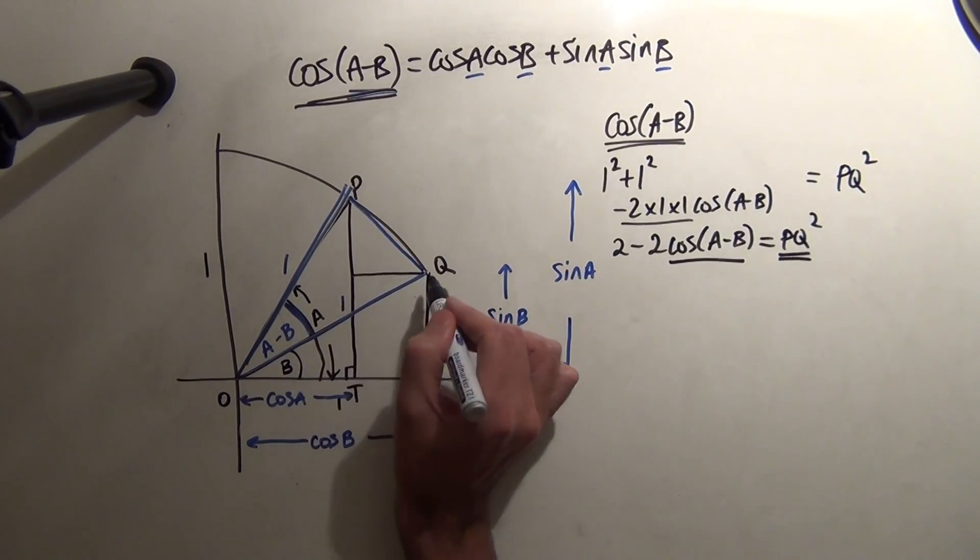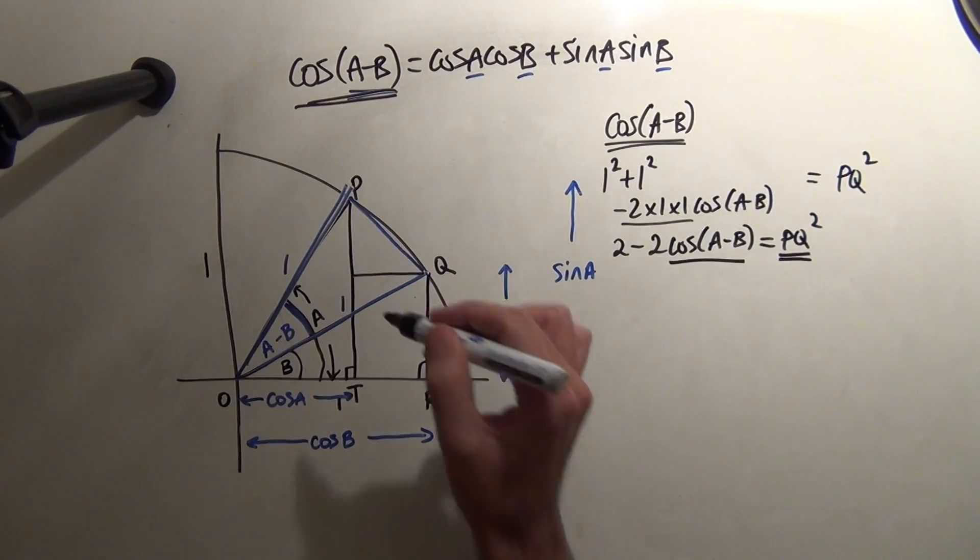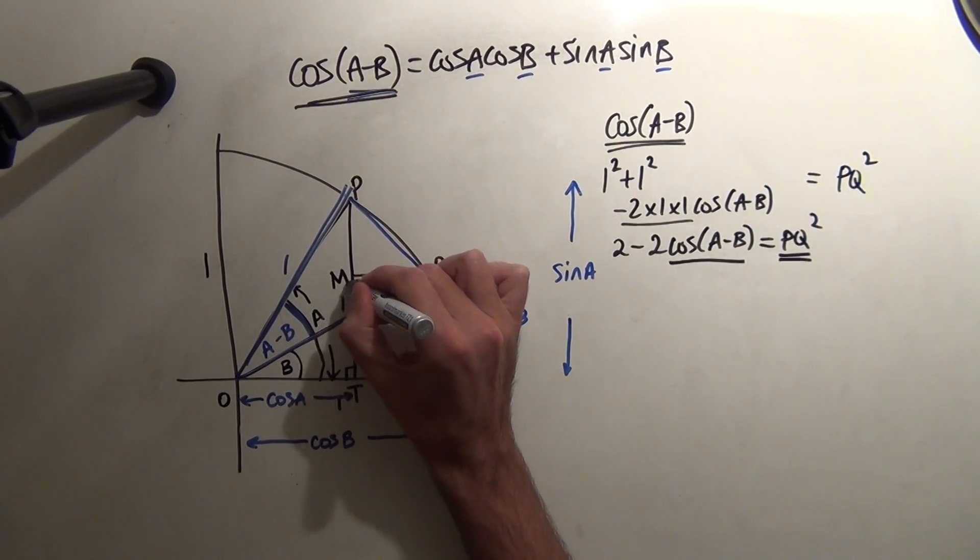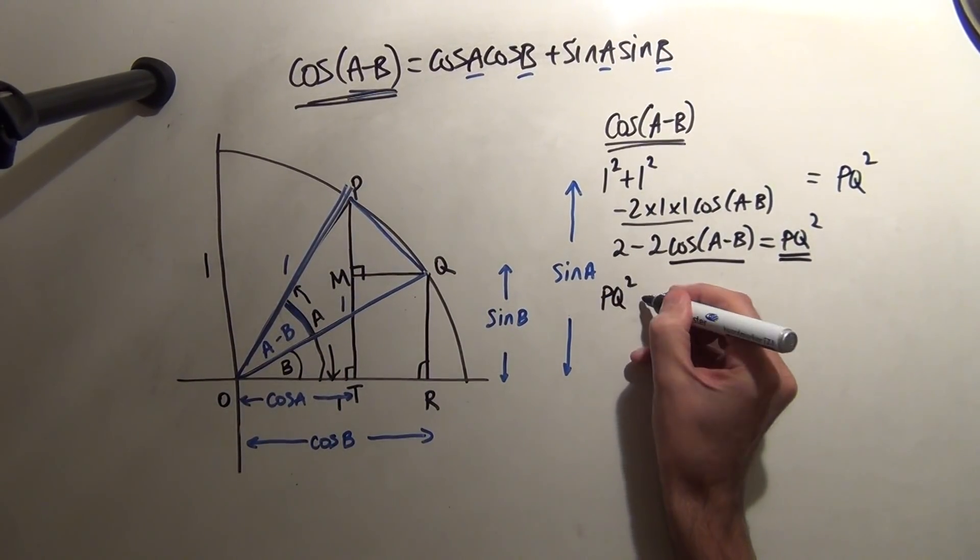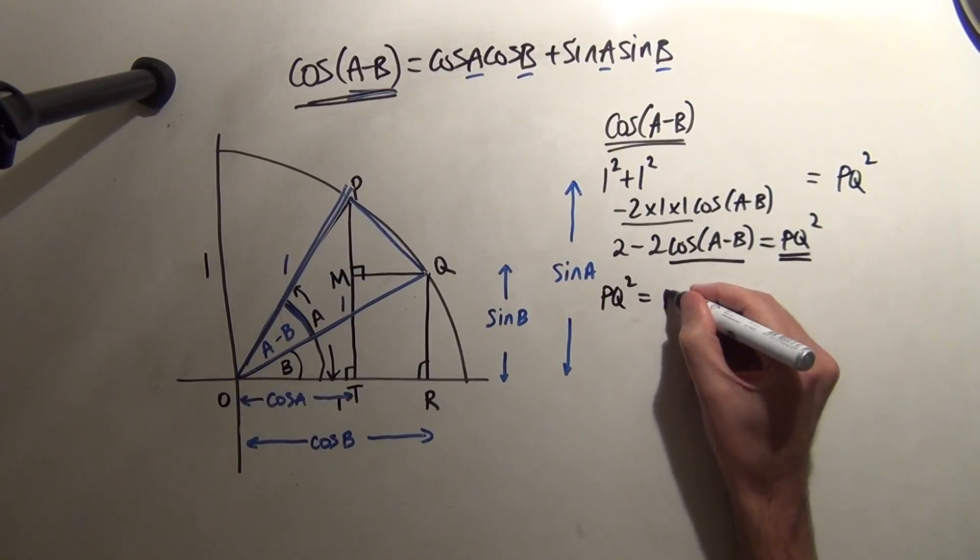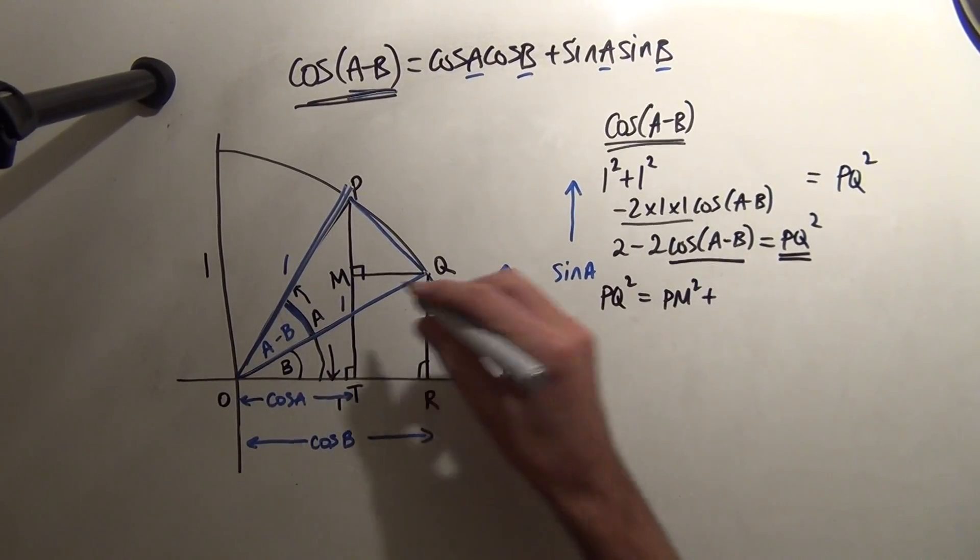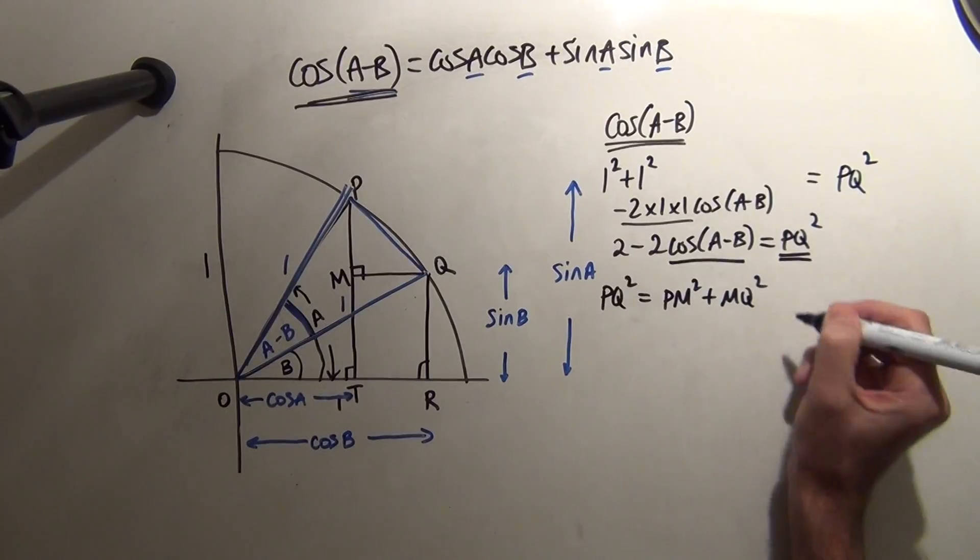So, a horizontal part from Q to, say, I'm going to call this M. And then I've got another right angle triangle, P, Q, M. So, by Pythagoras, PQ squared is PM squared plus MQ squared.